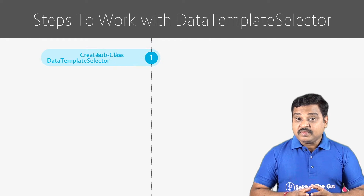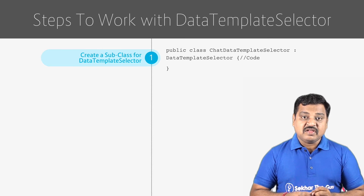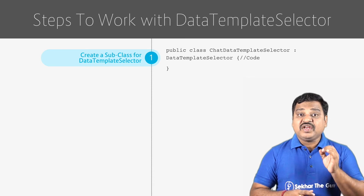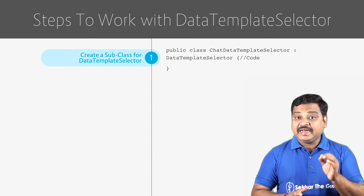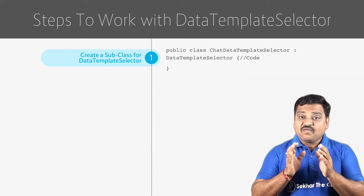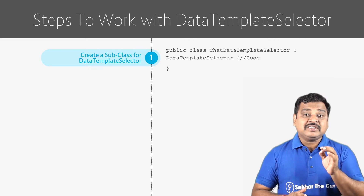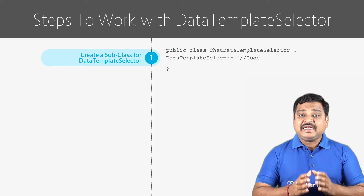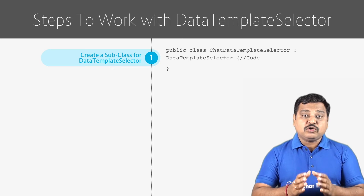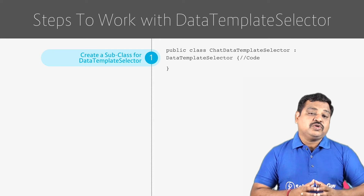Step 1: Create a subclass for the data template selector class. When we inherit the data template selector class, we first need to define the properties for the data template types as per our requirement. Once the properties are defined, we need to override the OnSelectTemplate method, which returns the data template value. While overriding the method, we can write our logic to verify which template should be used for the data object to display.